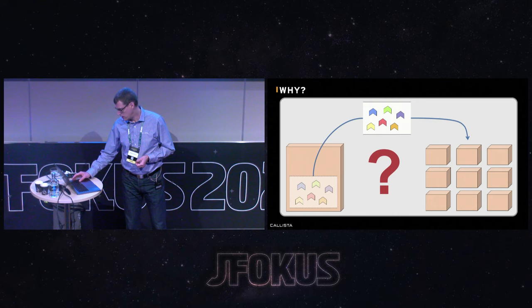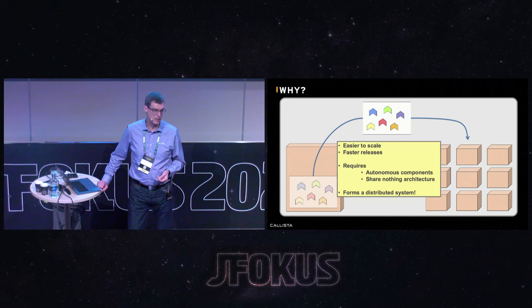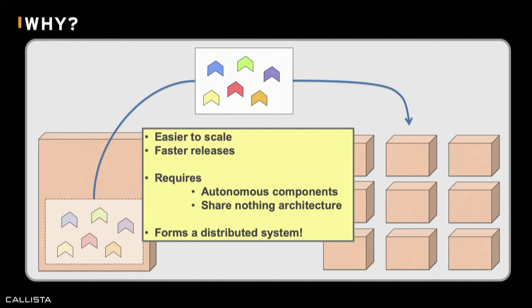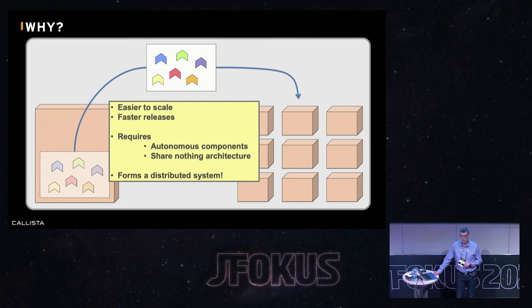So why do we want to break up our monoliths into small microservices? From my perspective it's about two things: they are expected to be easy to scale, and it's also expected that you can release new versions faster compared to a monolith. To make this work, a microservice has to be designed as autonomous components based on a share-nothing architecture, meaning they are absolutely not allowed to share data in databases. Instead, if they want to share information, they have to do that through formalized interfaces — either synchronous APIs or by sending messages asynchronously to each other. We have to understand that cooperating microservices form a distributed system, and a distributed system comes with inherited complexity.